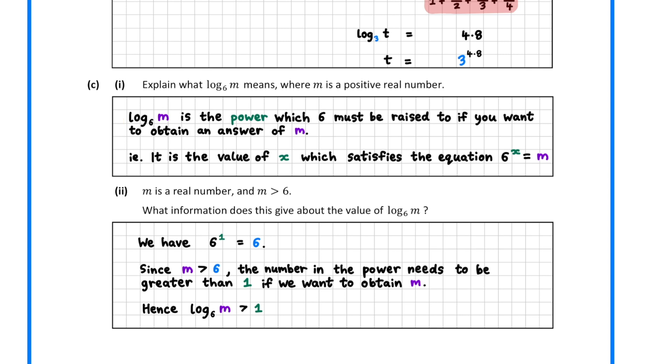In part ii, we are told that m is greater than 6 and asked to consider the value of log base 6 of m. Since 6 to the power of 1 is equal to 6, to obtain a value greater than 6, we will need a value greater than 1 in the power. Hence, log base 6 of m must be greater than 1.